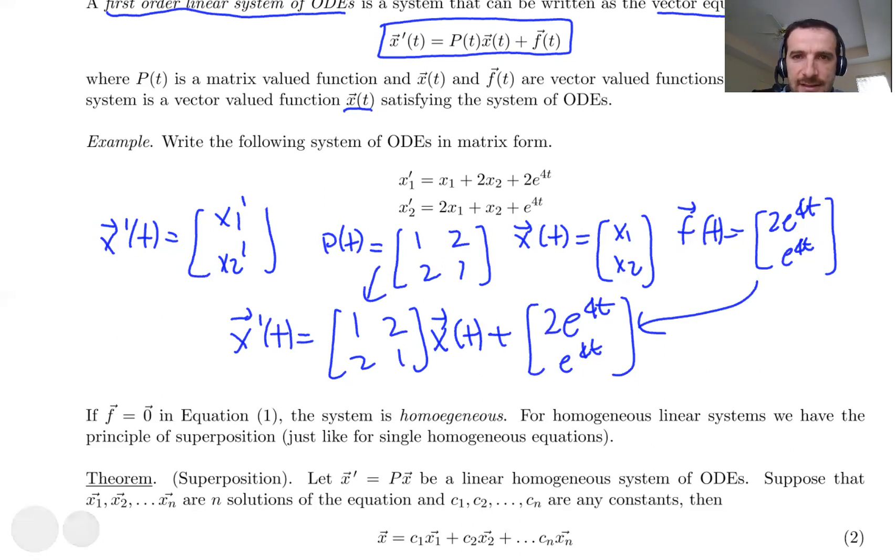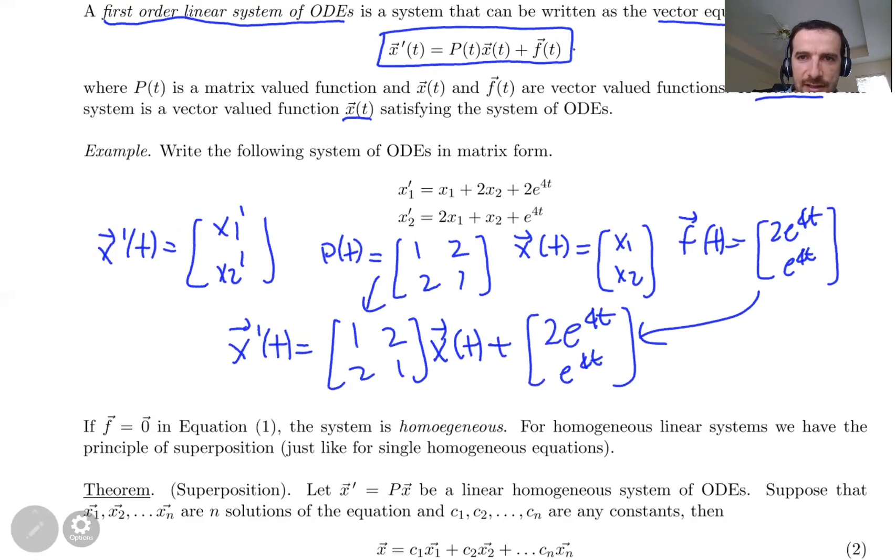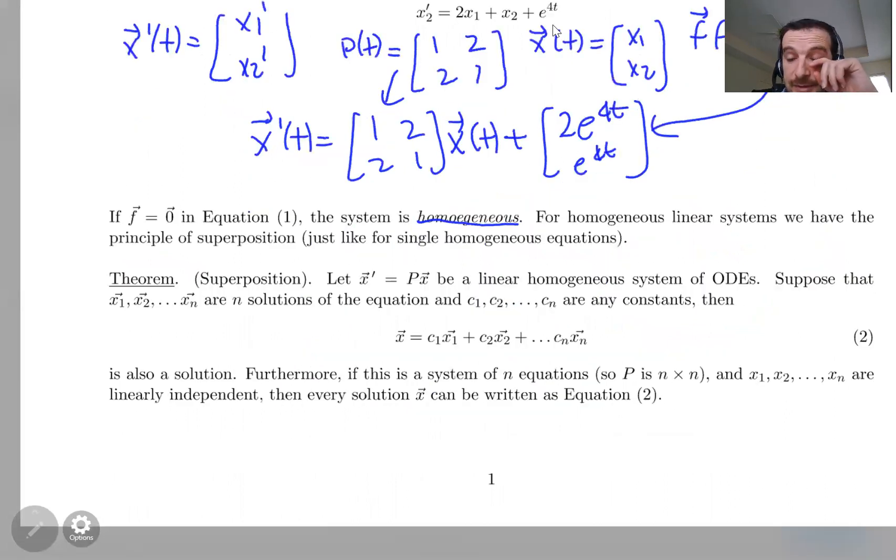In such a setting, I can say if the f(t) part is the zero vector, then we call that system a homogeneous system. As it happened in the one equation case, homogeneous first-order equations have superposition. The same thing also applies here. First-order homogeneous linear systems also have the superposition principle. Let me remind you and explain in this setting.